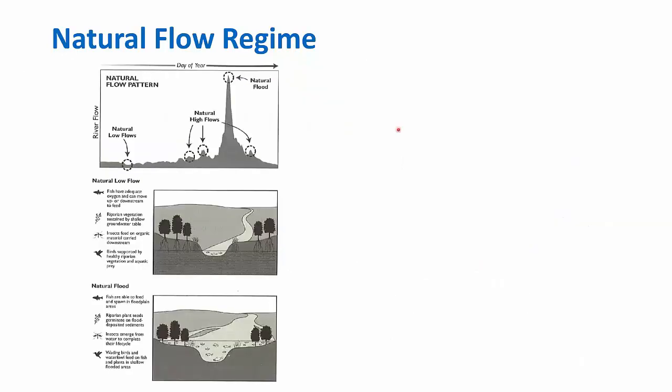As I explained, some of the components of the natural flow regime might be low flows, might be these kinds of peak flows, also called pulses, and these large flows, sometimes called floods or peak flows. This range and variation throughout the season provided benefits for fish,